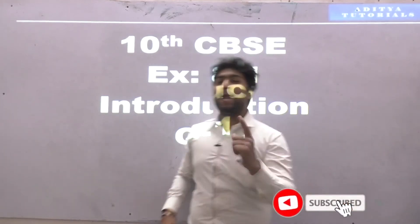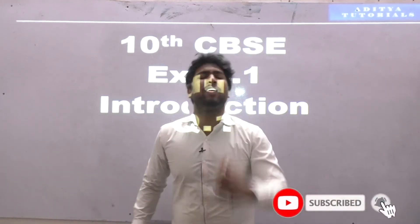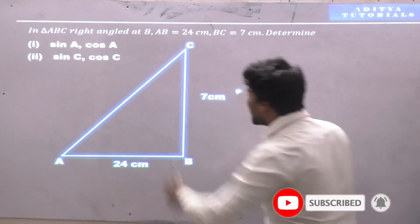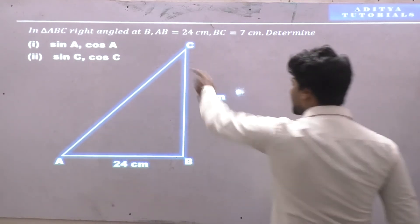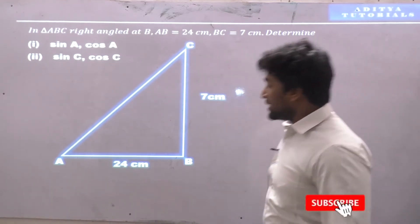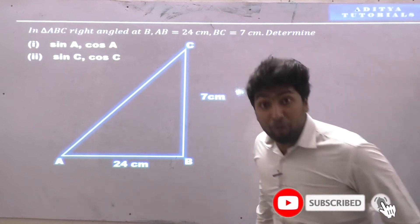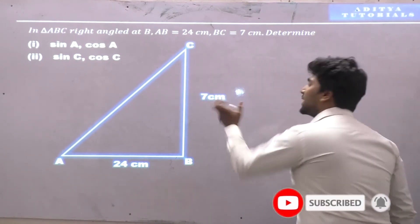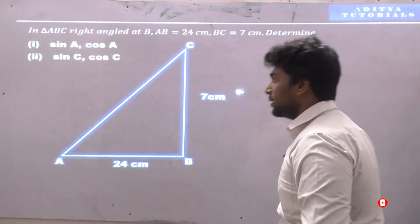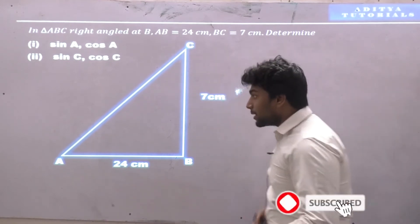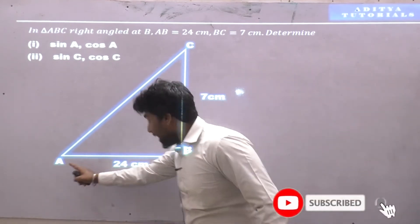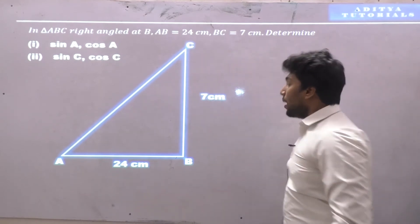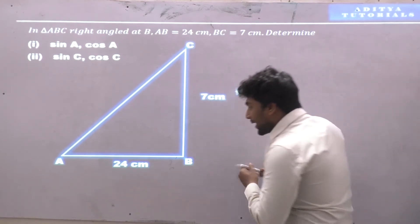Starting with exercise 8.1, question number 1. It's given that in a right angle triangle ABC, segment AB is equal to 24 cm, segment BC is equal to 7 cm. We need to determine sine A, cos A, sine C, cos C. This is a right angle triangle.